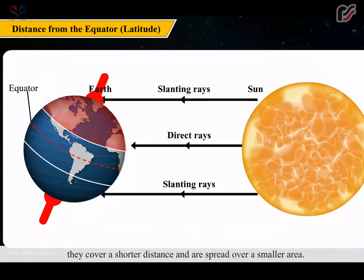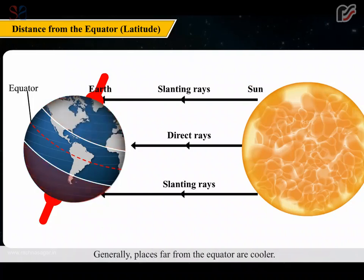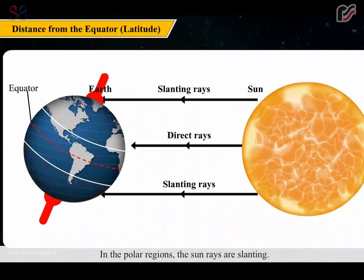They cover a shorter distance and are spread over a smaller area. Generally, places far from the equator are cooler. Poles are the farthest from the equator and are the coldest regions. In the polar regions, the sun rays are slanting — they cover a longer distance and are spread over a larger area.